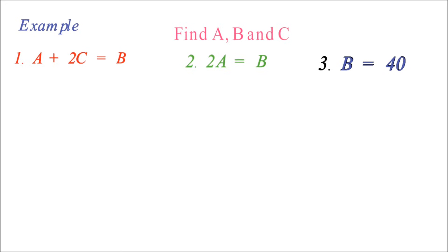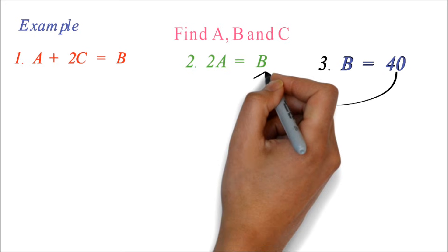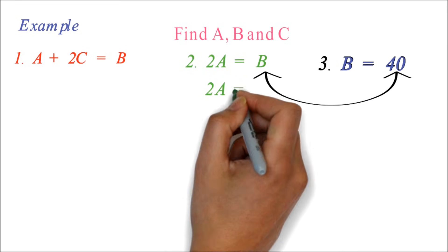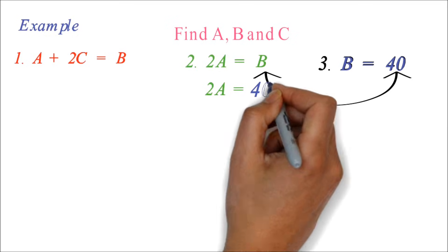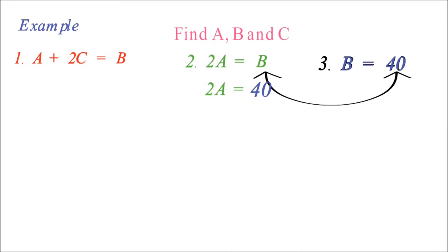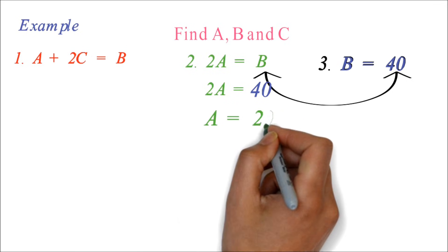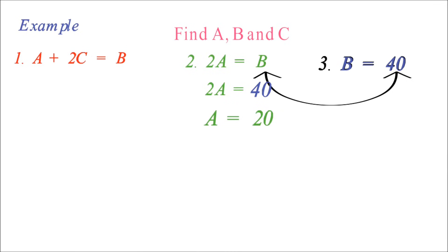We can work on equation 2 by replacing the B by 40. 2A equals 40. We can divide by 2 to get A equals 20. Now we know both A and B, so we can find C in equation 1.